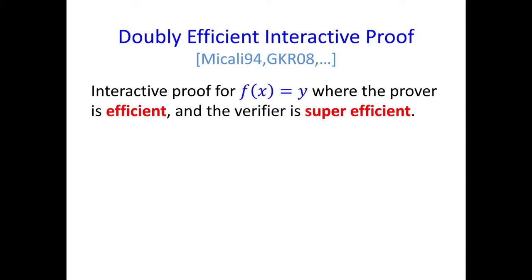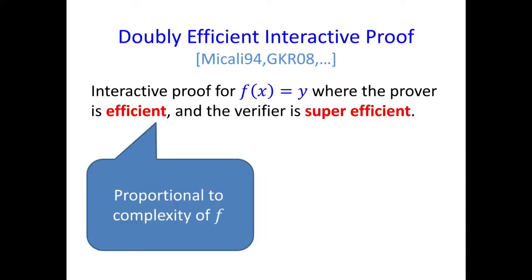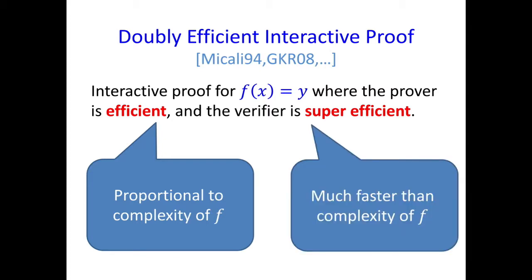A doubly efficient interactive proof is a special type of interactive proof where we still have the prover and verifier, with the prover trying to convince the verifier that f of x equals y, but with two very strict efficiency constraints. Both proving and verifying need to be efficient. The complexity of proving should be proportional to the complexity of computing the function — so if the function is computable in cubic time, proving shouldn't take much more than cubic time. What about verifying? We really want verifying to be super efficient — if we have a cubic time computation, we want verifying to be less than cubic time, perhaps quadratic or even linear time.